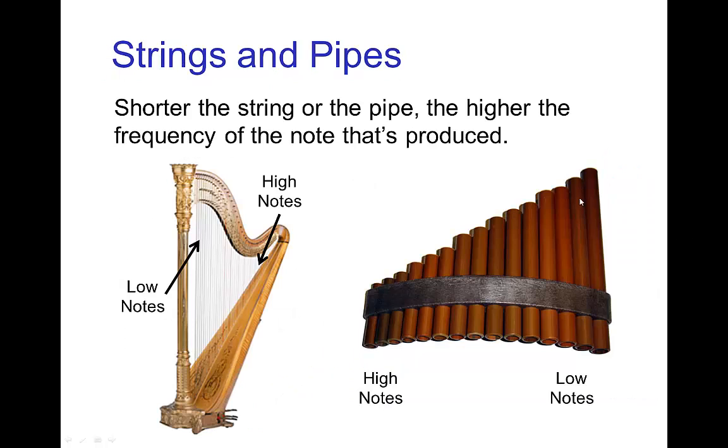So we have that the higher notes, the ones with higher pitch, are produced by, for a stringed instrument, the shorter strings. The lower notes, the low pitch is produced by the long strings. The short strings produce sound waves with short wavelengths, the long ones with long wavelengths.